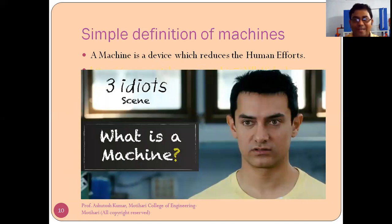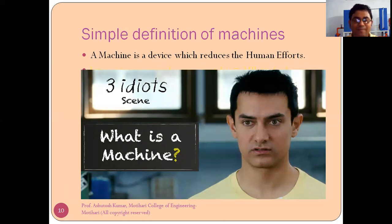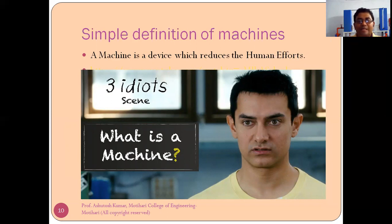A very simple definition — all of you must have watched the movie 3 Idiots, which is a very famous movie of Indian cinema. A very simple definition of machine is: a machine is a device which reduces human effort. I think all of you engineering students must know this definition from that famous scene. So in one line, a machine is a device which reduces human effort.